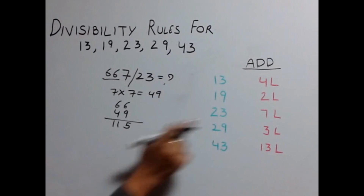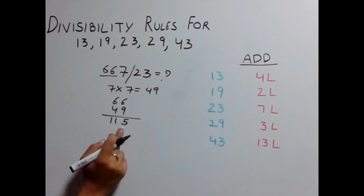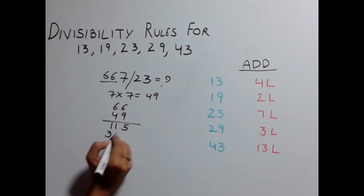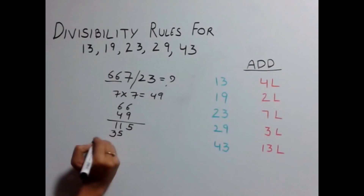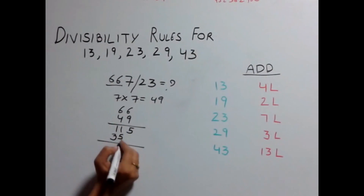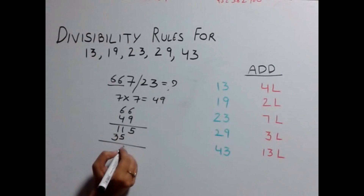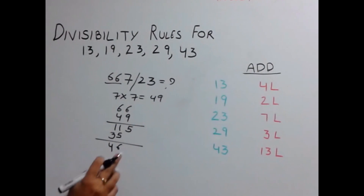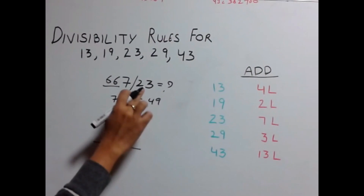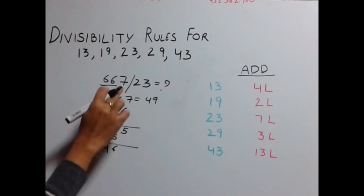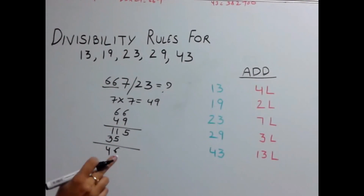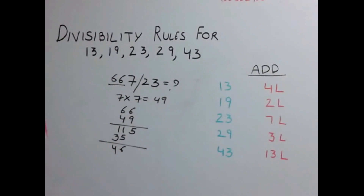Again, multiply the last digit 5 by 7, giving 35. Add it to the remaining number, which gives you 46. Since 46 is divisible by 23, this number is also divisible by 23.